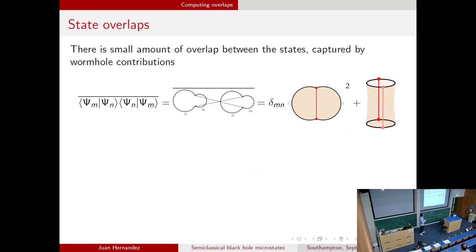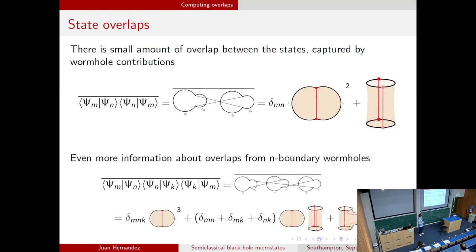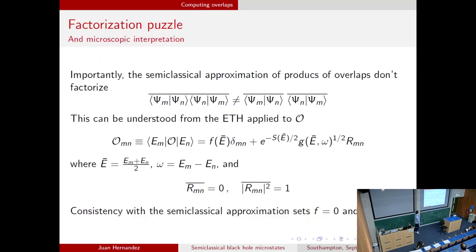This apparent tension is resolved from the fact that there's actually a very small amount of overlap between the states. The magnitude can be estimated by wormhole contributions. If we take the magnitude squared of the overlaps in the semiclassical approximation, we find a leading term only when the masses are equal — consistent with the norm squared. But even when masses are different, there's a non-vanishing contribution suppressed by factors of e to the S, giving very small off-diagonal terms. We can get more information by computing higher boundary wormholes, where something doesn't vanish even if all masses are microscopically different.